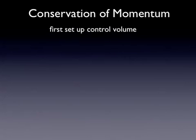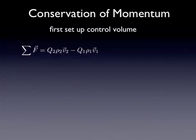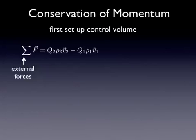For conservation of momentum, we need to start the same way we do with conservation of mass. Our first step is to set up a control volume, and then this is the equation for conservation of momentum that's in the FE handbook. In the textbook it's quite a bit different, but you can convert from one to the other. I'm going to use this because it's in the FE handbook, and I think it's a little more approachable — a little more obvious what we're talking about.